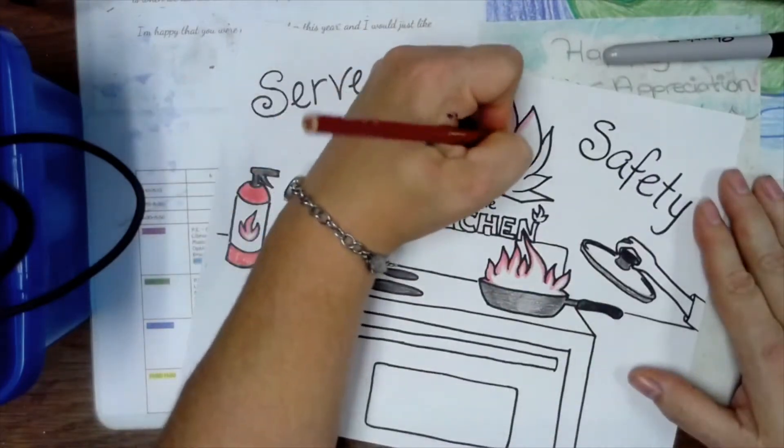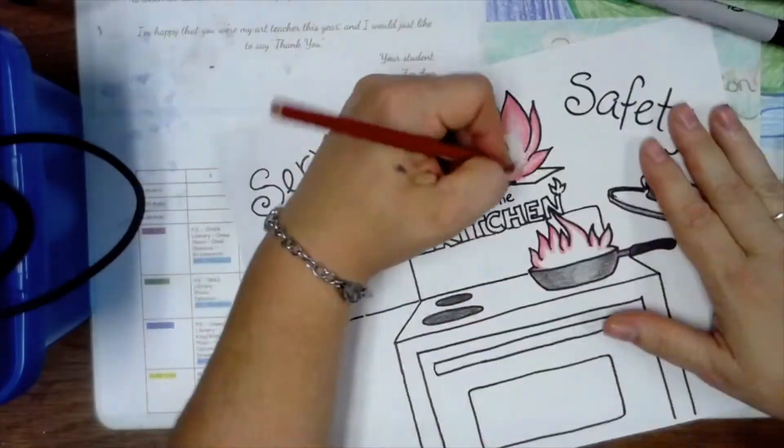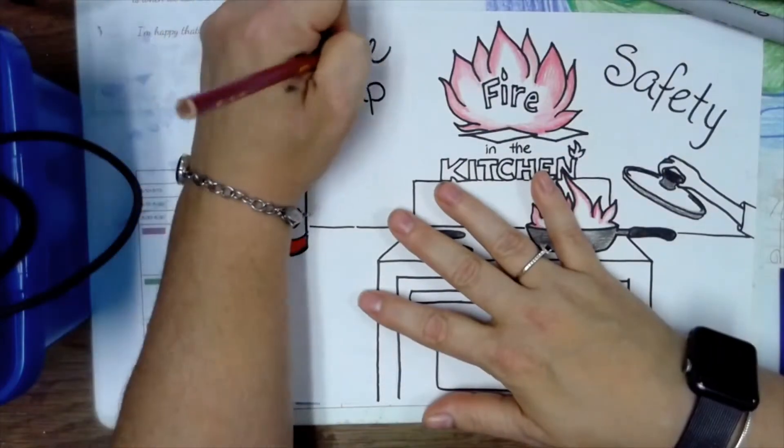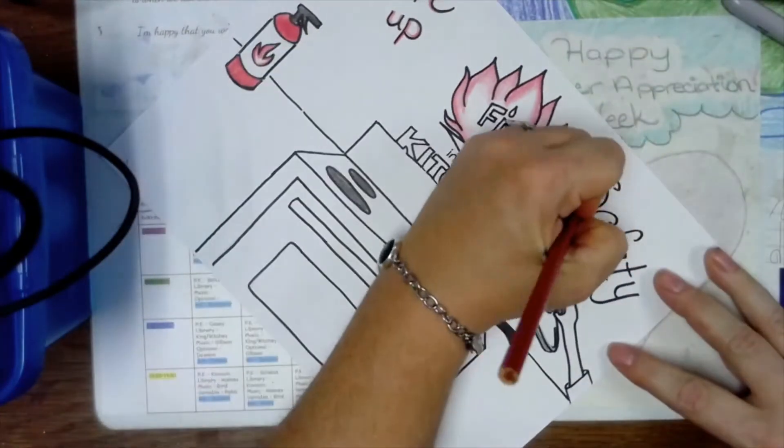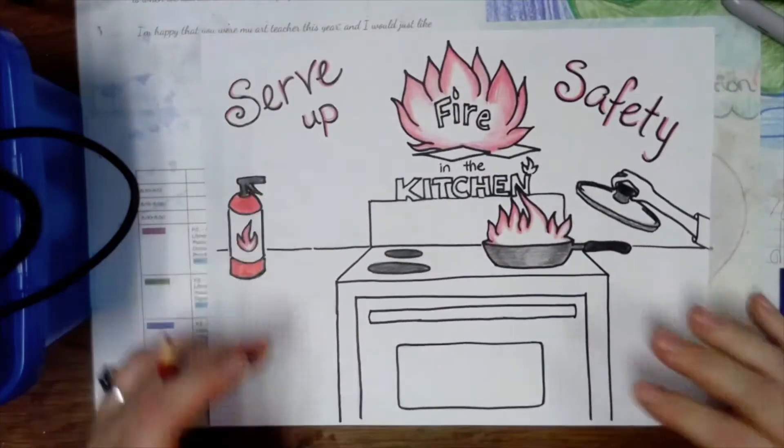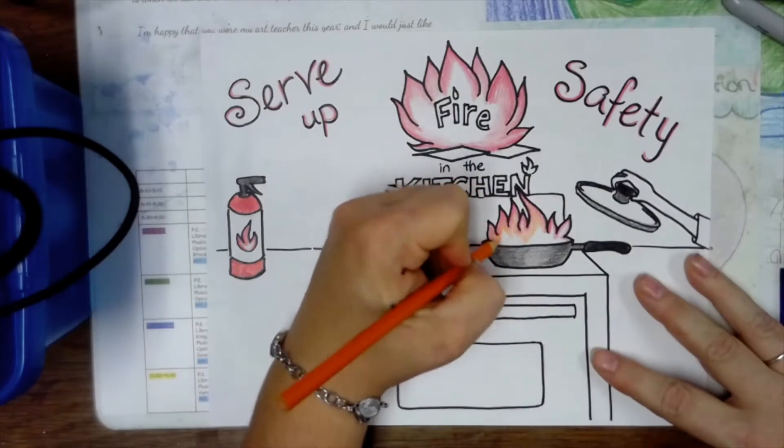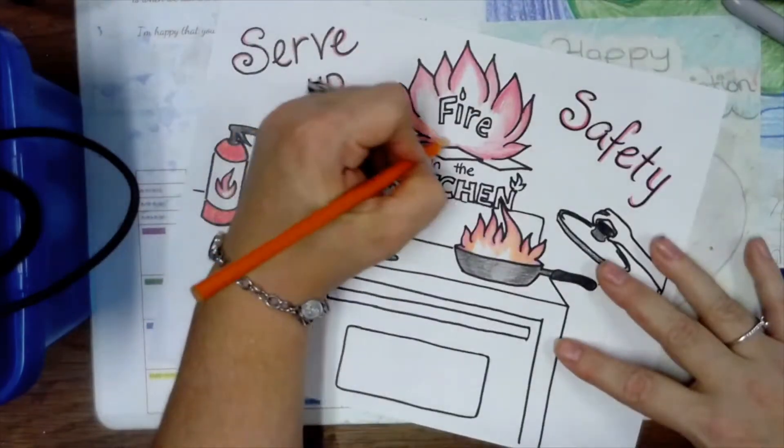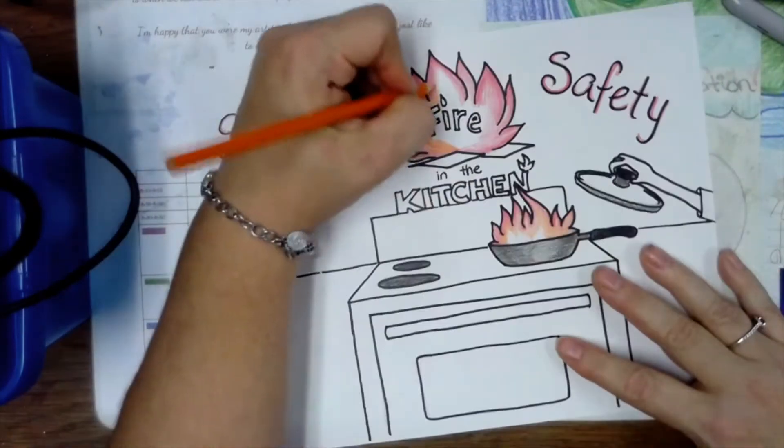When you're coloring fire, it's actually got a lot of different colors in it, so you can go with your reds and oranges and yellows. I'm also blending the colors together, blending in between them.